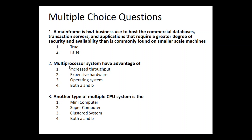Second question: The advantage of multiprocessor systems is — as we just discussed — it is helpful for increasing throughput. With multiple processors, the output or throughput will be high. Expensive hardware is a disadvantage, not an advantage. So the answer is the first option: increased throughput.